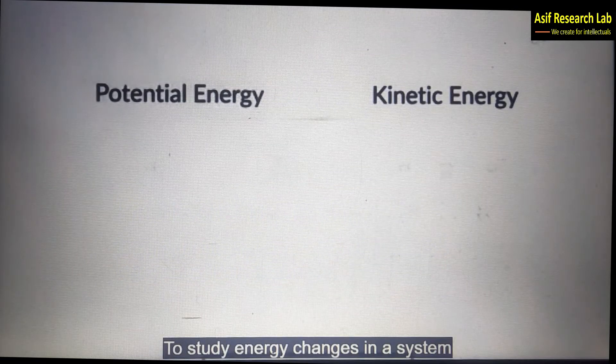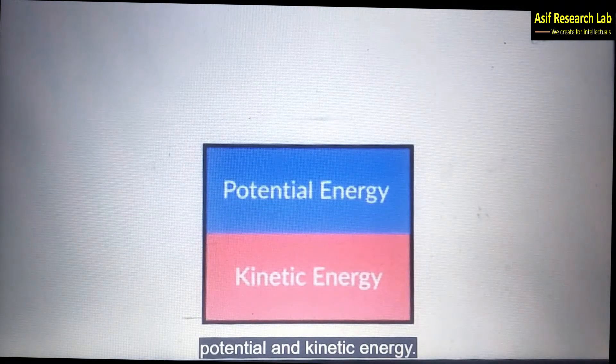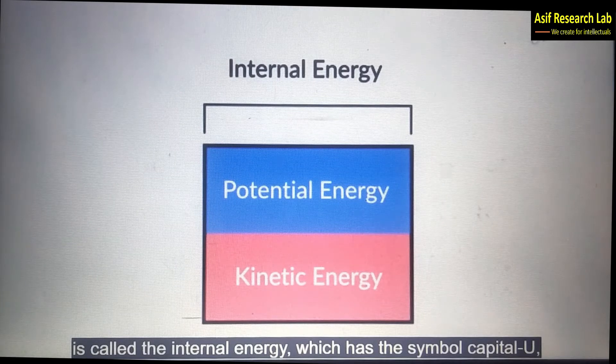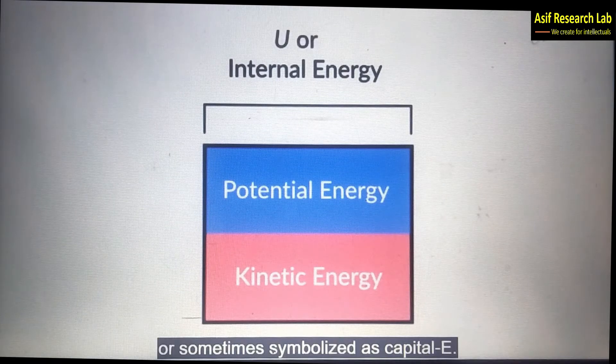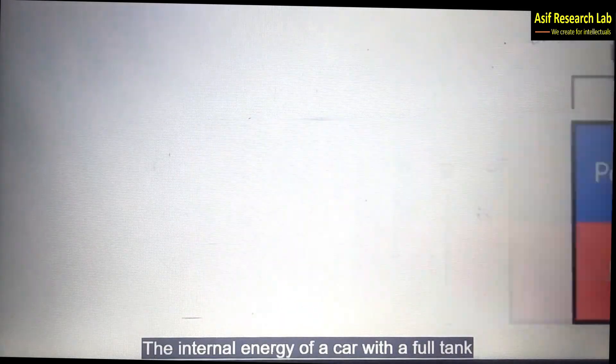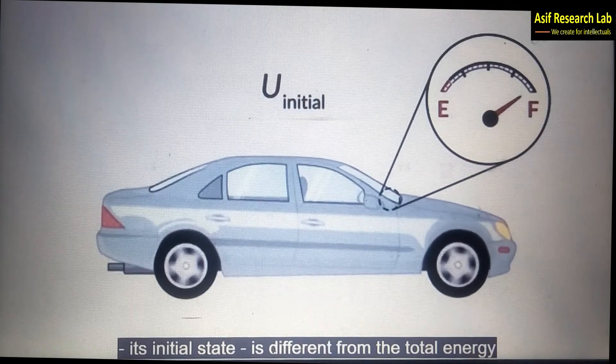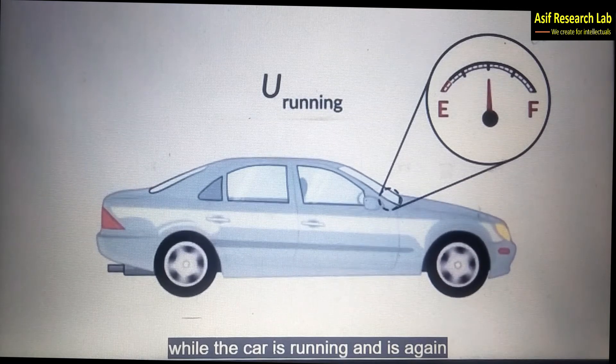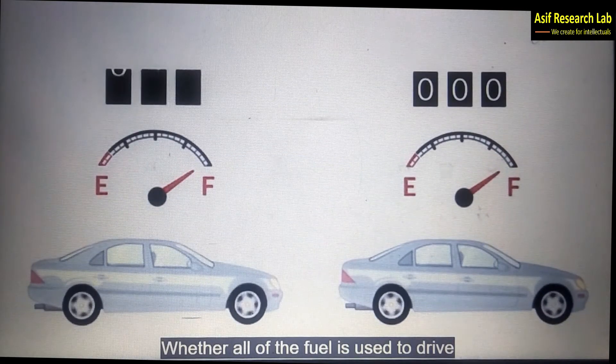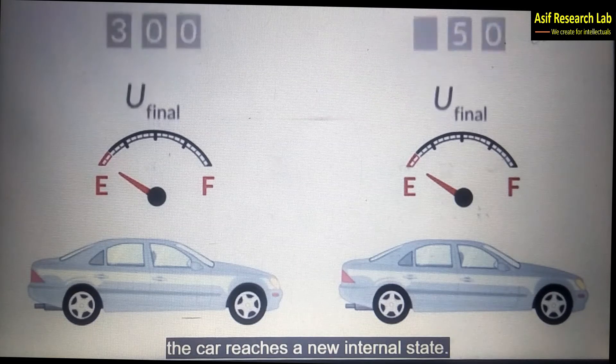To study energy changes in a system all sources of energy must be considered including potential and kinetic energy. The total energy within a system at any given time is called the internal energy which has a symbol capital U or sometimes symbolized as capital E. A system's internal energy can change. The internal energy of a car with a full tank in its initial state is different from the total energy while the car is running and is again different when the tank is empty, its final state. Whether all of the fuel is used to drive 300 or 50 miles is irrelevant. When the tank is empty the car reaches a new internal state.